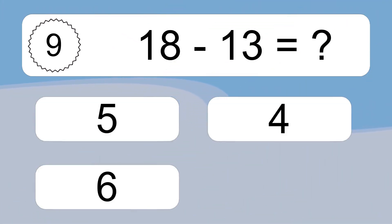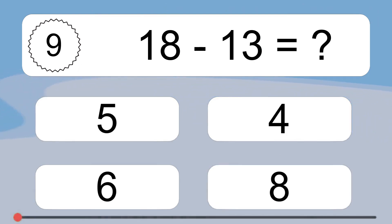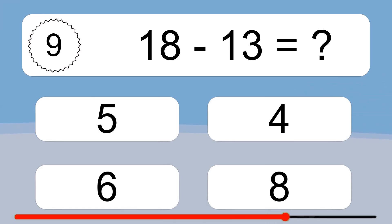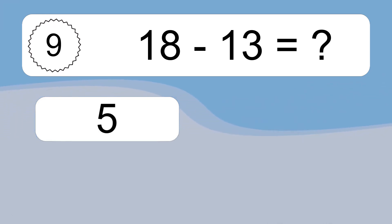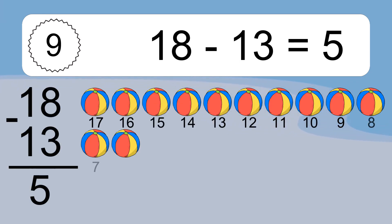18 minus 13 equals what? 18 minus 13 equals 5.